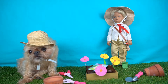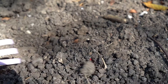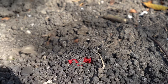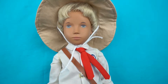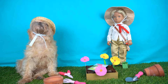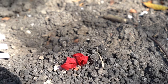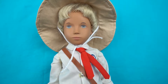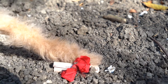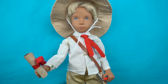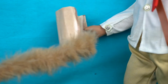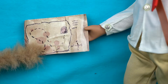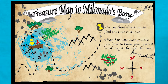It is such a sunny day. La la la la, till the soil. What is that? I don't see anything. Down there in the ground — what is that? Oh, let's unroll it. It's a map — a treasure map to Milo Nato's bone!